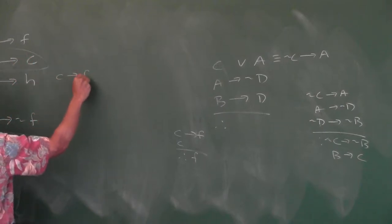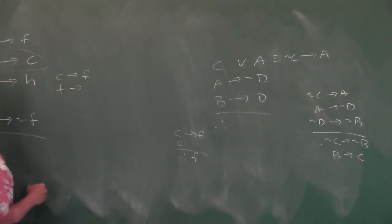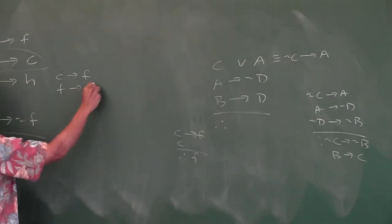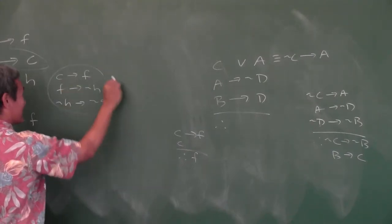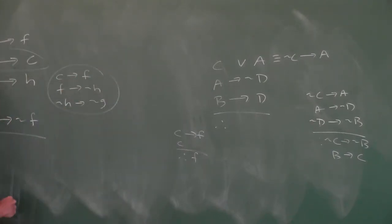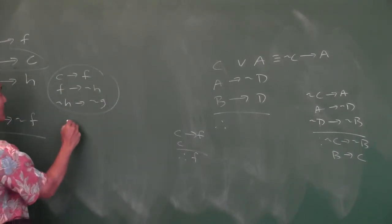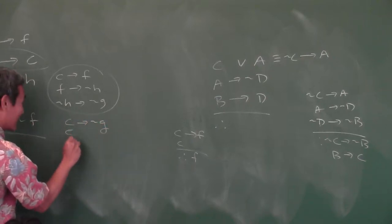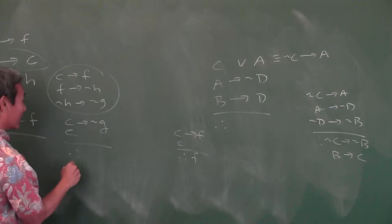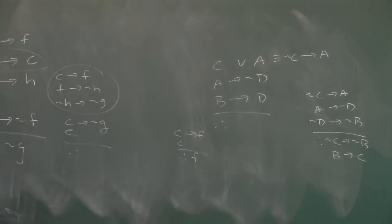So we've got C implies F. Then I need F implies something. The contrapositive of 'G implies H' is NOT H implies NOT G. Putting these together: C implies NOT G. And since C is given, therefore NOT G is the answer — the goblins are not out.